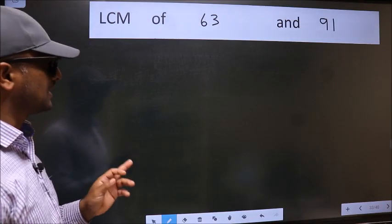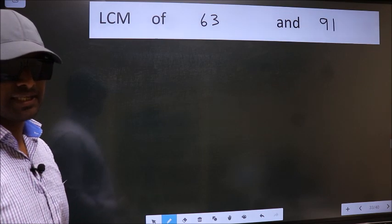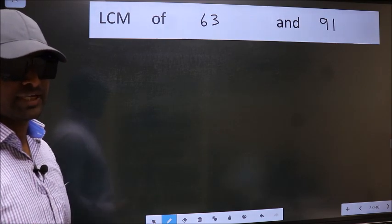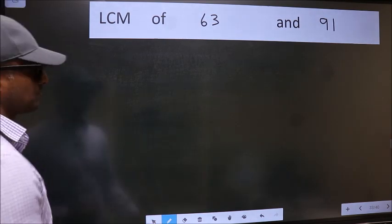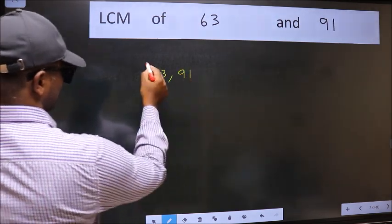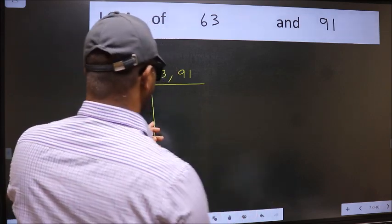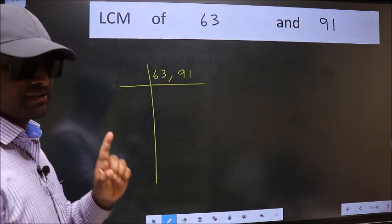LCM of 63 and 91. To find the LCM, we should frame it in this way: 63, 91. This is your step 1.